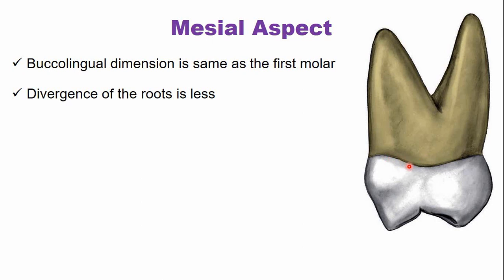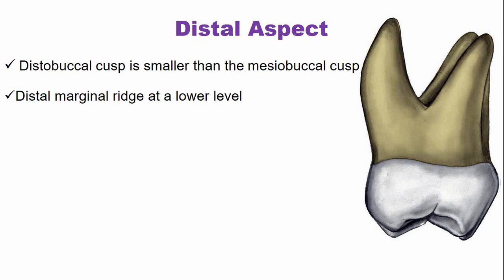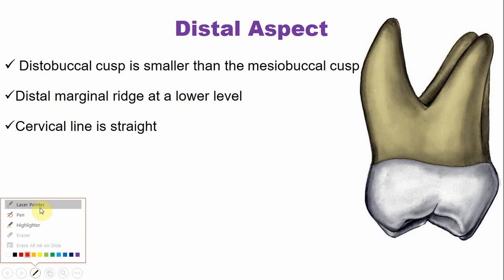From the distal aspect, the distobuccal cusp is smaller compared to the mesiobuccal cusp, and the marginal ridge is present at a slightly lower level. Because the marginal ridge and cusp are short, part of the occlusal surface is visible from the distal aspect. Like other posterior teeth, the cervical line is nearly straight on the distal aspect.